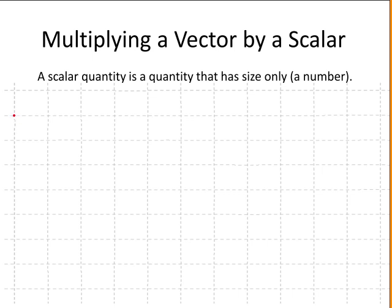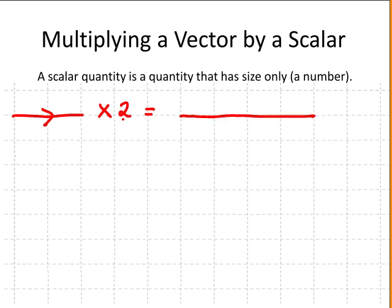Taking this vector for example, we multiply it by a scalar — we multiply it by the number 2. Multiplying the vector by 2 doubles its length. We multiply it by a positive scalar, so the direction of the vector remains the same.